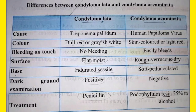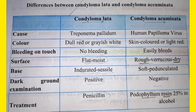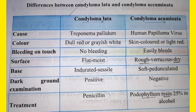Looking at this comparison table: on the left side is condyloma lata, associated with syphilis, and on the right side is condyloma accumulata, which is cauliflower-like and accumulates together. The cause of condyloma lata is Treponema pallidum, which causes secondary syphilis. The cause of condyloma accumulata is human papillomavirus (HPV).